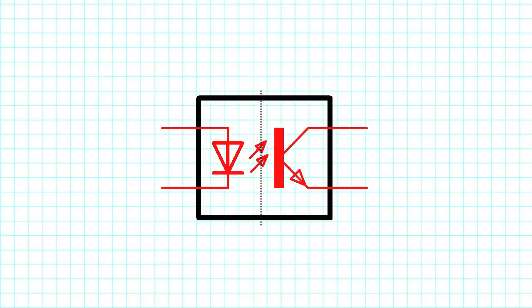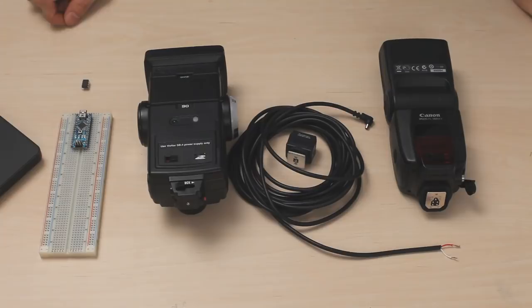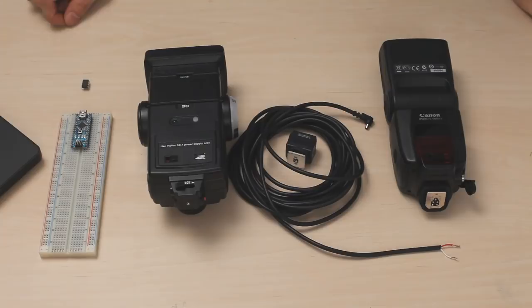So now let's use the opto-isolator to trigger the flash. There are many different types of flash connectors, but most flashes have these hot shoe connectors on the bottom and will fire when you close the connection between the contact on the bottom and inside the flange. Now you can either jury-rig your own wires to these terminals, or you can use a PC sync cable.